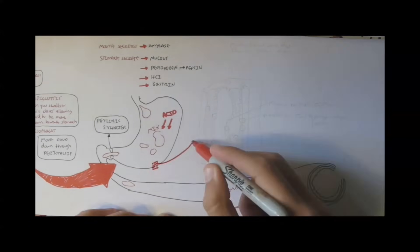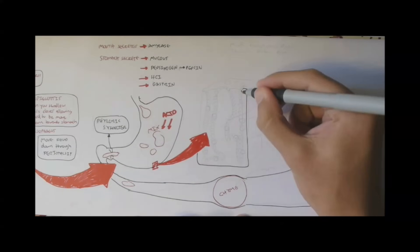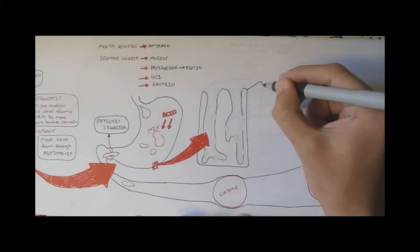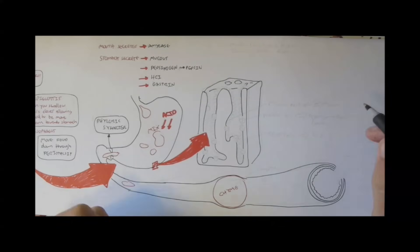And the sphincter is what separates the stomach from the small intestines. And the bolus, once it leaves the stomach, is referred to as chyme.